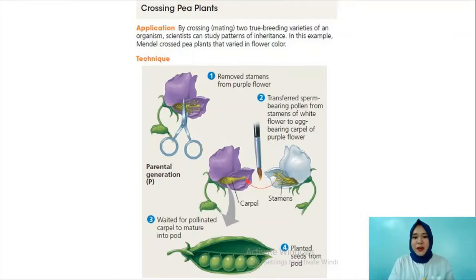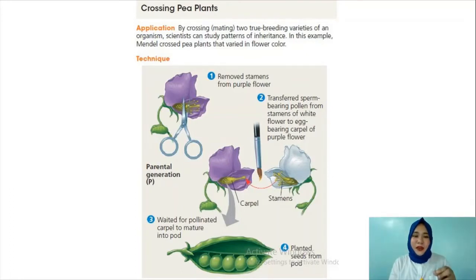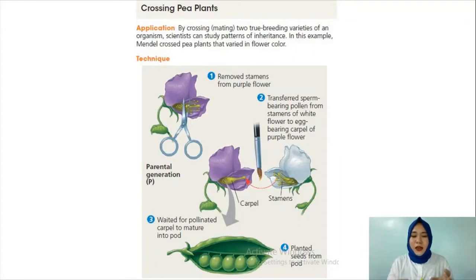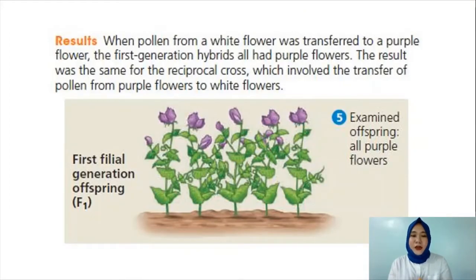Let's proceed to the pea plant experiment. This is how Mendel did it: he got a pea plant with a purple flower and removed the stamen to expose the carpel — where the egg or ovary is located. Then he obtained another pea plant with a white flower and transferred the pollen from the stamens of the white flower to the egg-bearing carpel of the purple flower using a small brush. He then waited for pollination until the carpel matured into a pod, harvested the seeds, and planted them. He found out that all of the hybrids produced purple flowers.